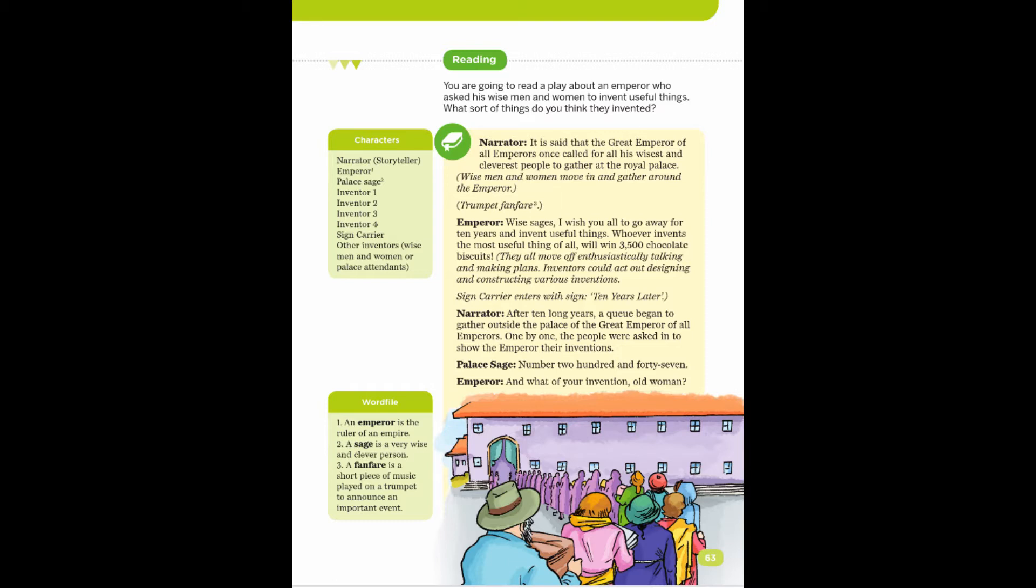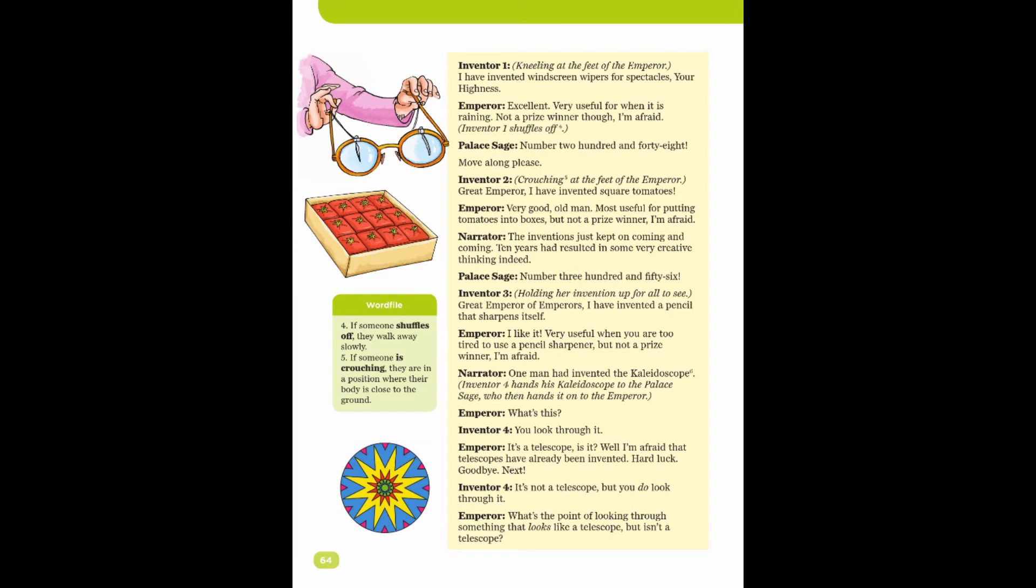One by one, the people were asked in to show the emperor their inventions. Palace Sage: Number 247. Emperor: And what of your invention, old woman? Inventor One, kneeling at the feet of the emperor: I have invented windscreen wipers for spectacles, your Highness.